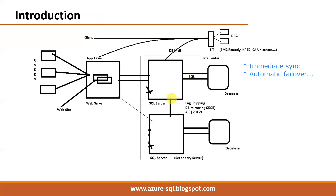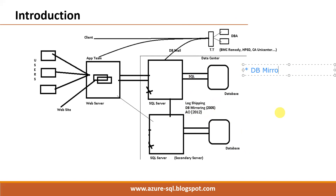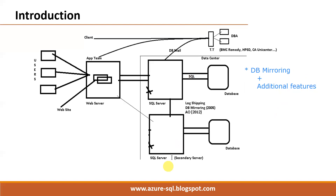In mirroring, whenever changes are made in the primary or principal database, they are immediately synced with the secondary or mirror. And if the primary goes down — whether database down, server down, or network down — automatically the secondary comes online and users can continue their work. Mirroring was introduced in 2005 but has limitations; to overcome them, Microsoft introduced Always On. Always On is essentially database mirroring with additional features.